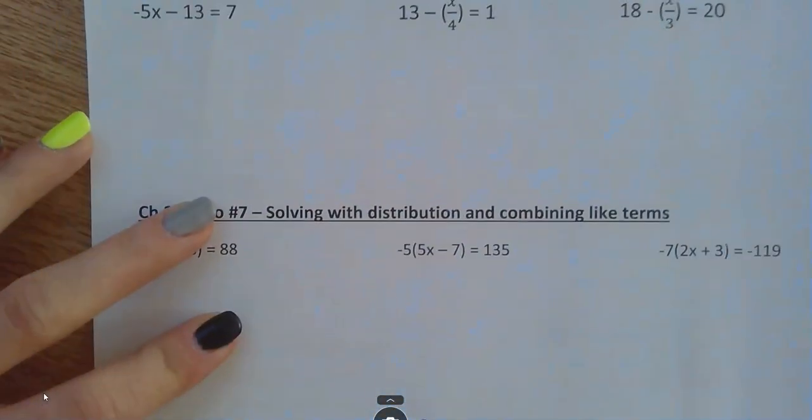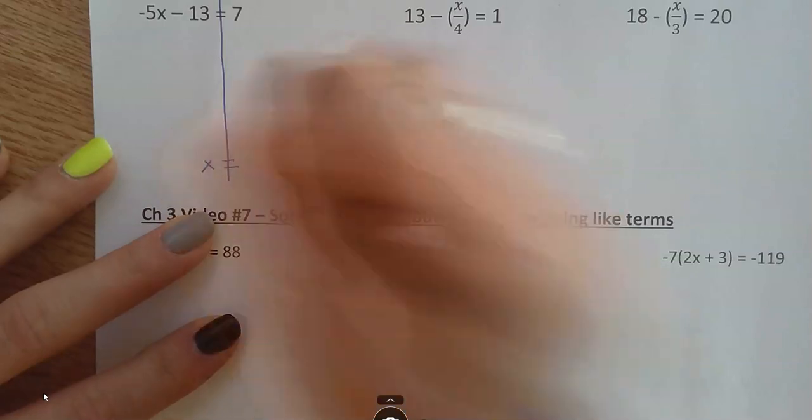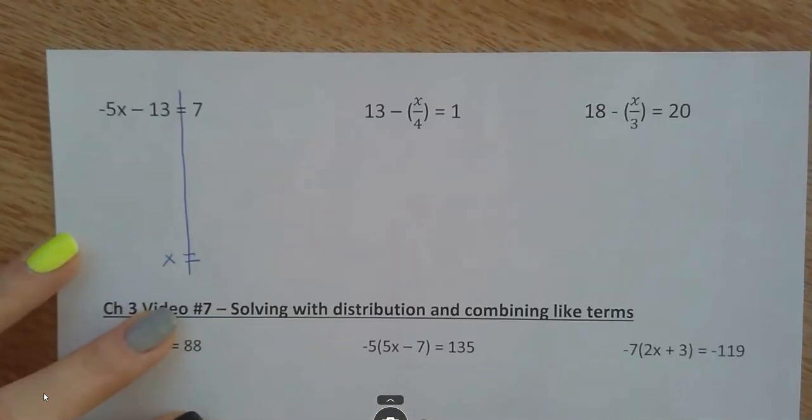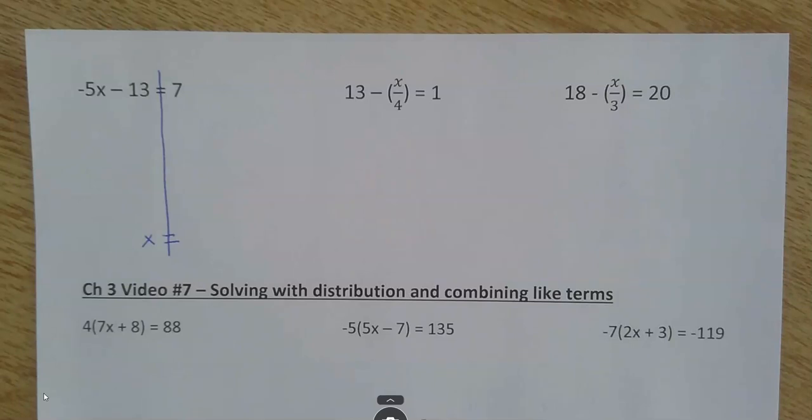Remember to show your work completely. So, line down the equal sign. Go until you get the variable by itself. Okay. So, you have 3 problems to do here and finish it up. Hit play when you're ready to check them when they are completely done.